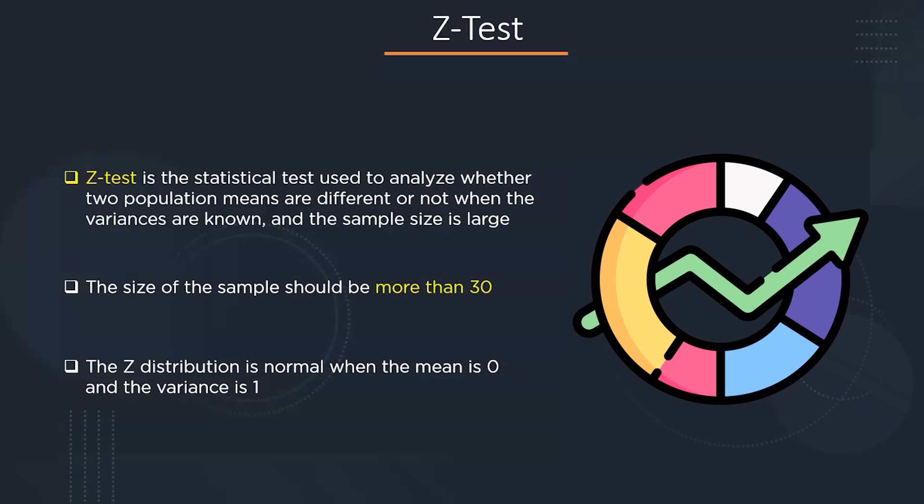There are a few assumptions to consider when calculating the Z-test. Although observations are independent, there are merely three steps in hypothesis testing: first, state the null and alternate hypothesis; second, perform the statistical test; and third, use the Z-value to accept or reject the null hypothesis.